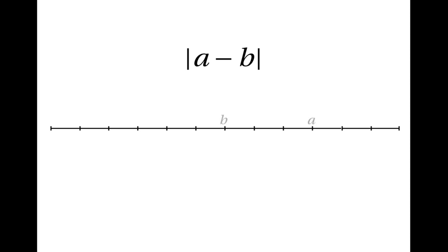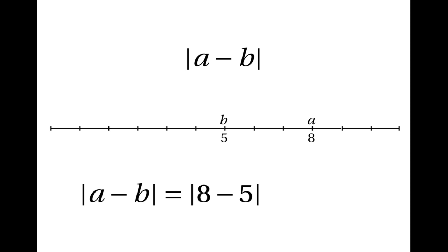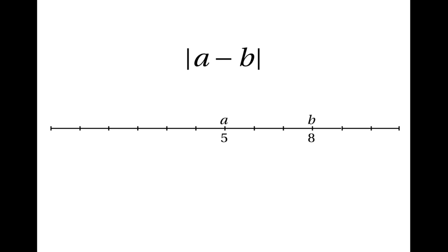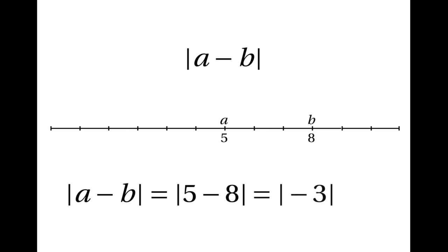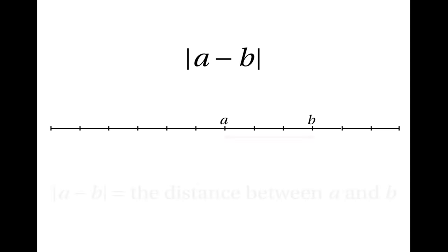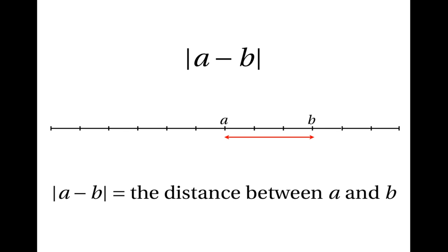There are two cases. If a > b, for example a = 8 and b = 5, then |a − b| = |8 − 5| = |3| = 3. If b > a, for example b = 8 and a = 5, then |a − b| = |5 − 8| = |−3| = 3. In both cases, |a − b| is the distance between a and b on the number line.